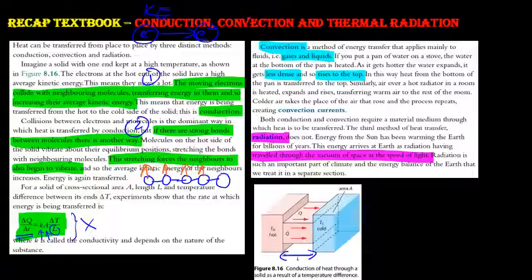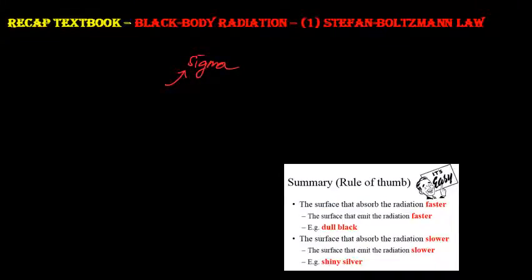Convection is very simple — you can read it yourself. For radiation we will explain more later when we discuss blackbody radiation and the Stefan-Boltzmann law. From what you learned in IGCSE, you know qualitatively that a dull black material absorbs or emits radiation faster, while a shiny silver material absorbs or emits at a slower rate. In IB we want to calculate exactly how fast or slow.